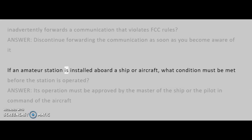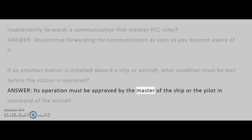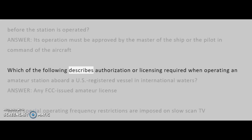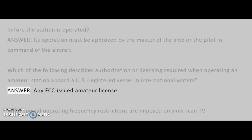If an amateur station is installed aboard a ship or aircraft, what condition must be met before the station is operated? Answer: Its operation must be approved by the master of the ship or the pilot in command of the aircraft. Which of the following describes authorization or licensing required when operating an amateur station aboard a US-registered vessel in international waters? Answer: Any FCC-issued amateur license.